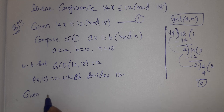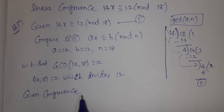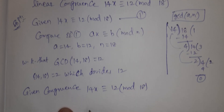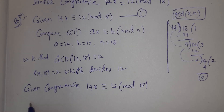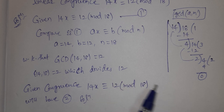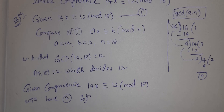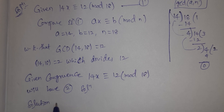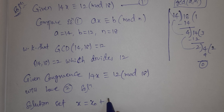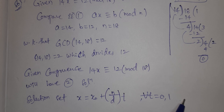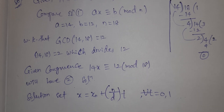Since the GCD is satisfied, the congruence 14x ≡ 12 (mod 18) will have solutions — exactly 2 solutions, because the GCD is 2. In the previous problem I got 3 solutions when the GCD was 3, and 2 solutions when GCD is 2. Don't confuse. For all t equal to 0 and 1 only.